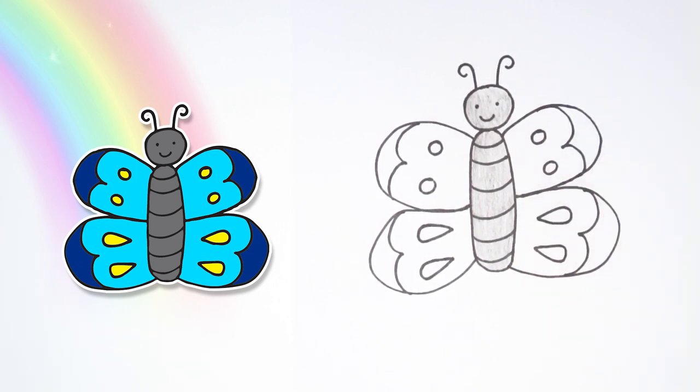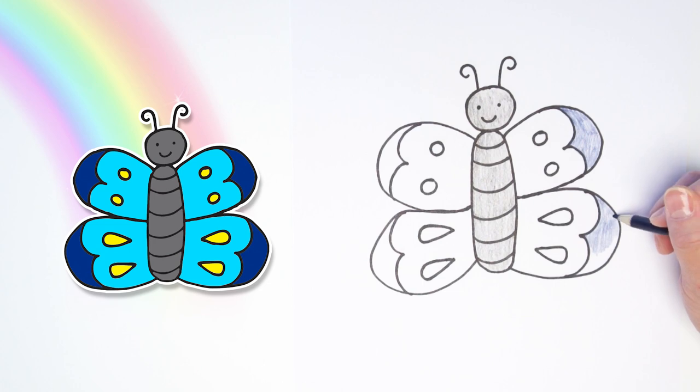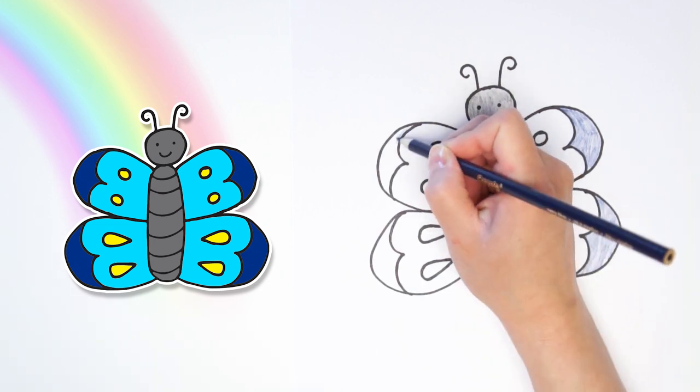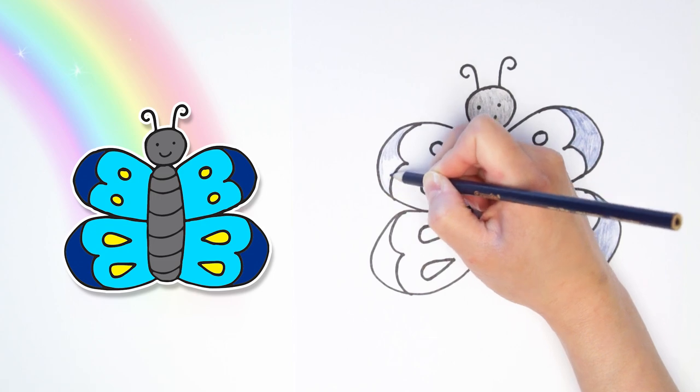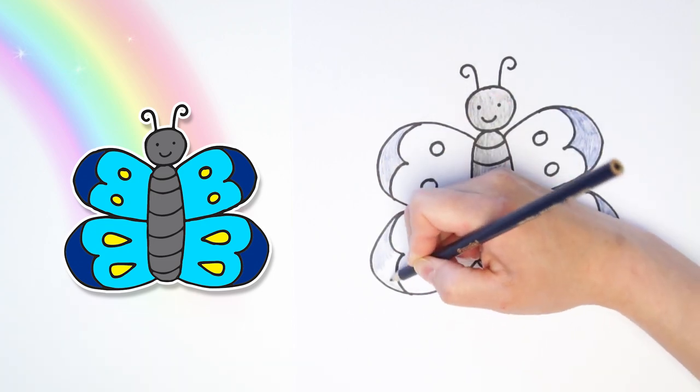And then next, I'm going to choose a darker blue color for the outside of the wings. I'm going to do it for this wing, number one. And this one, number two. And then on the other side, number three. And then one more for number four.